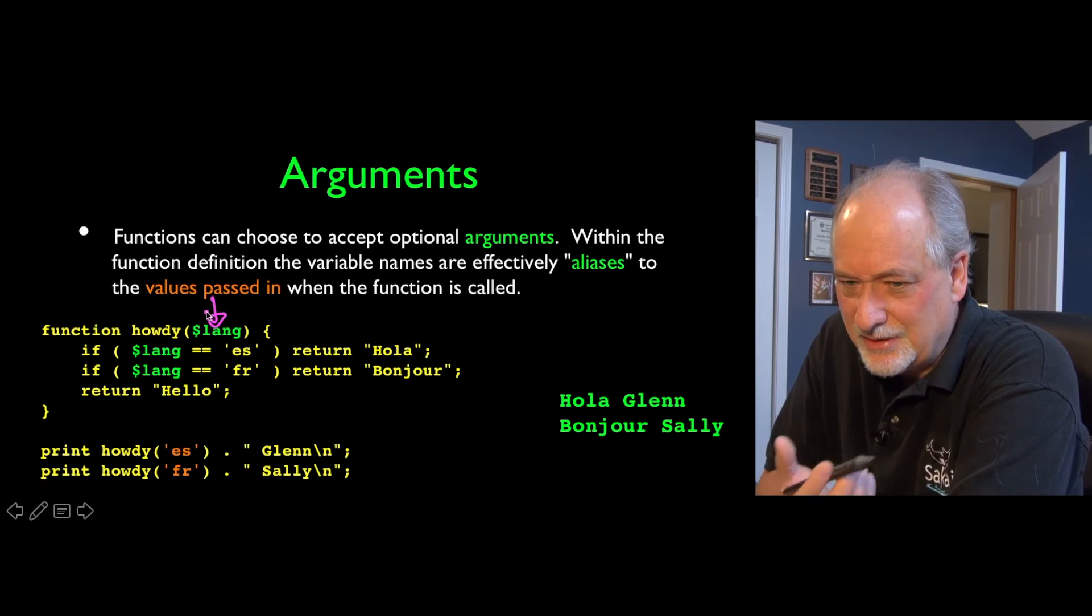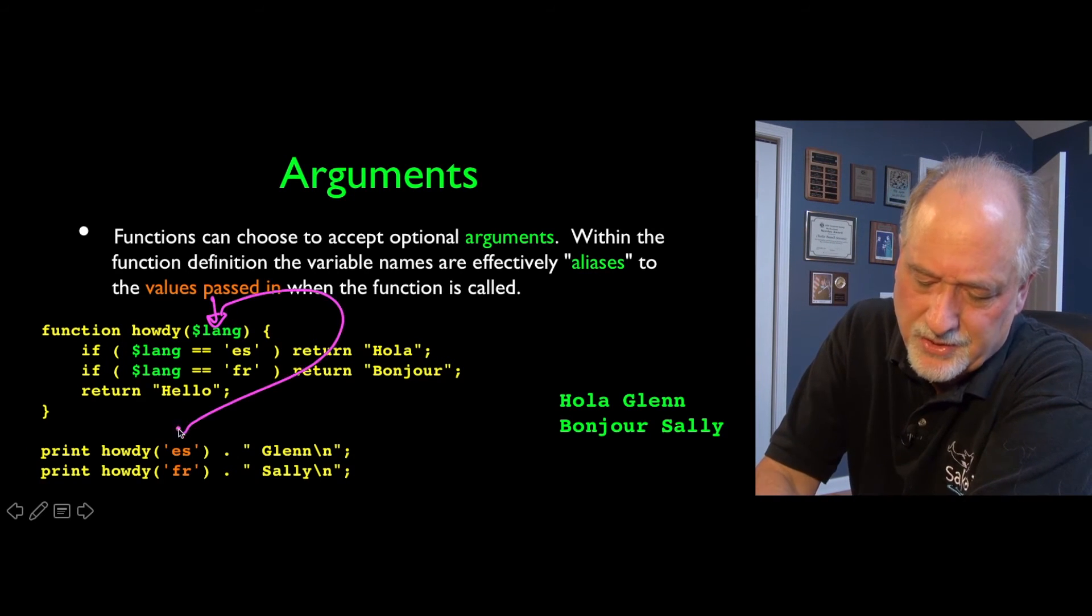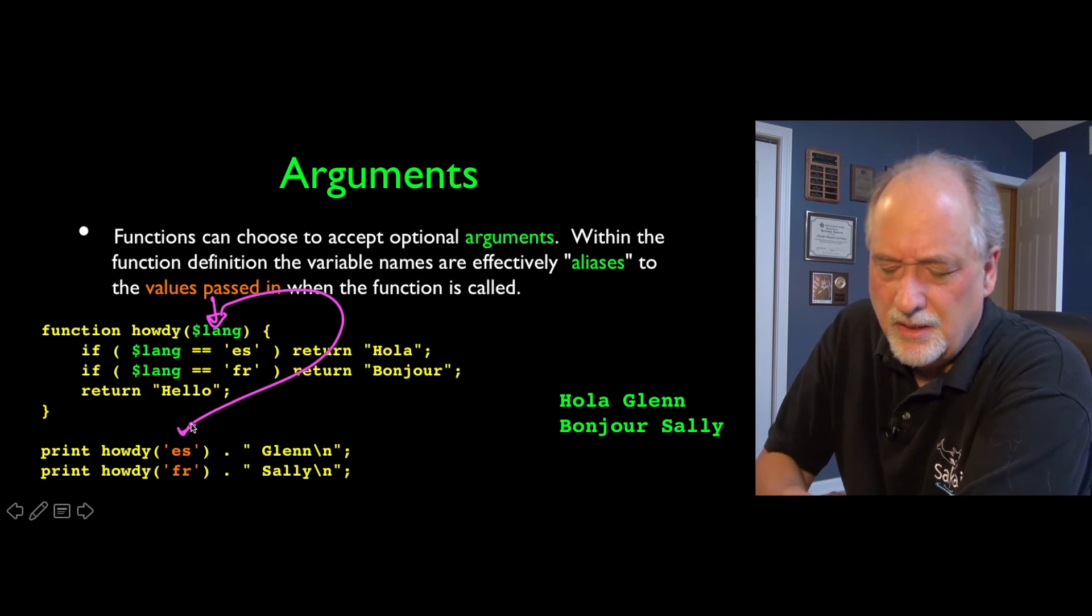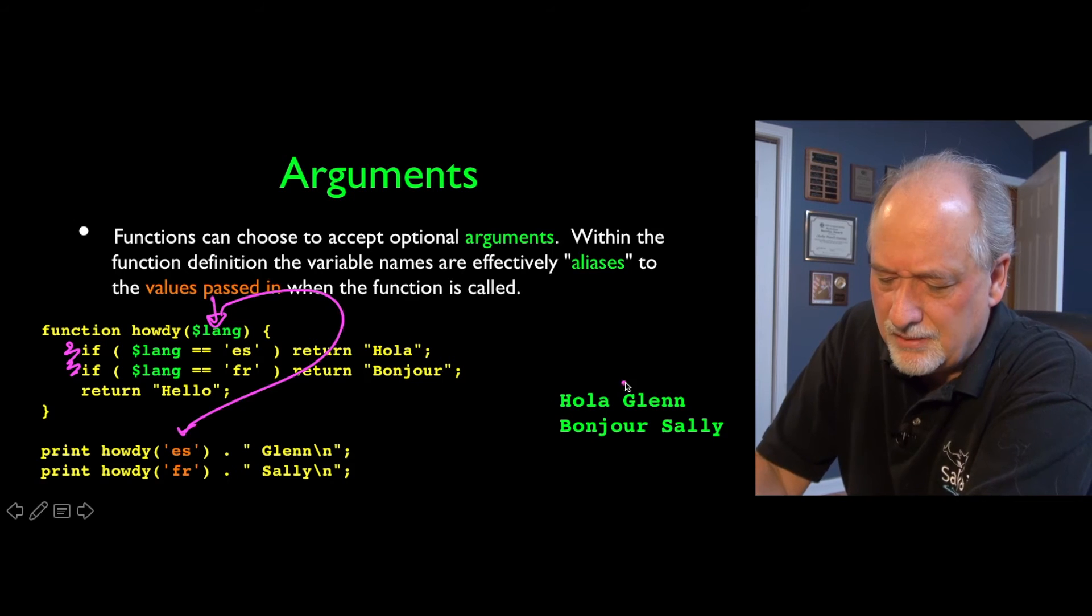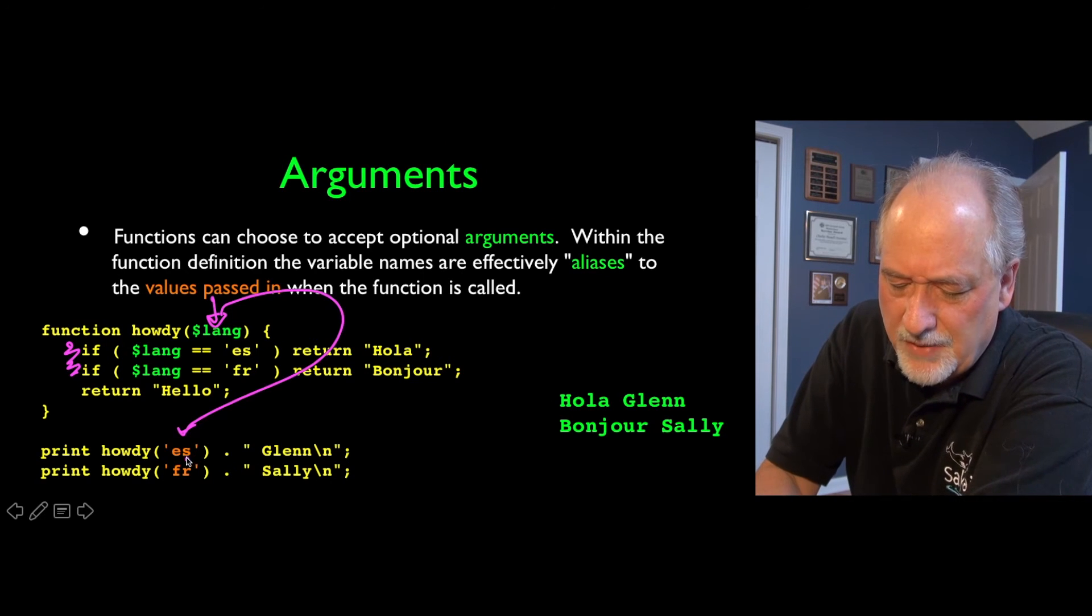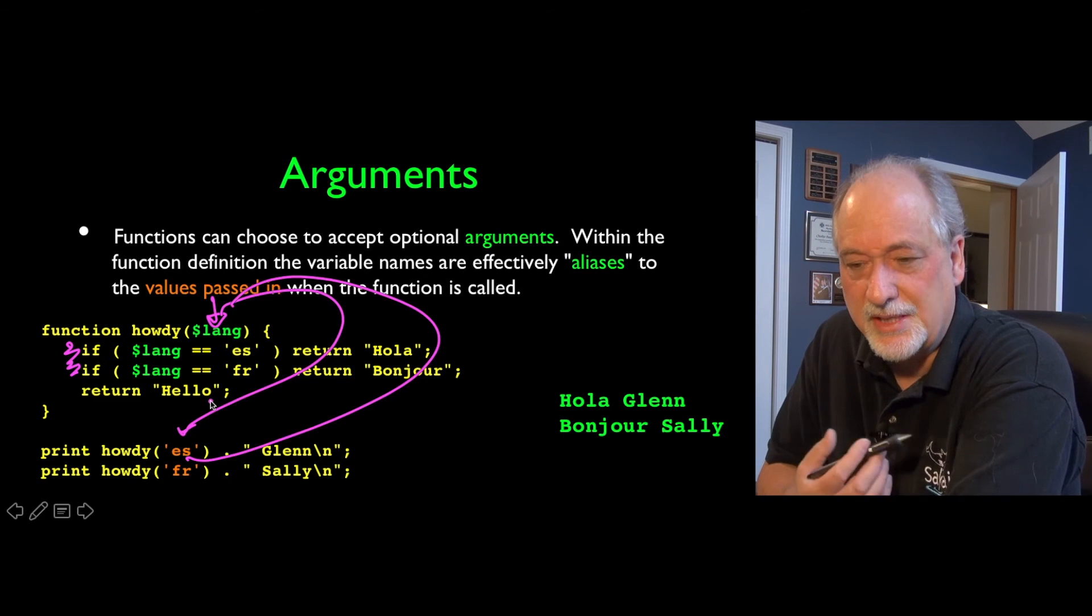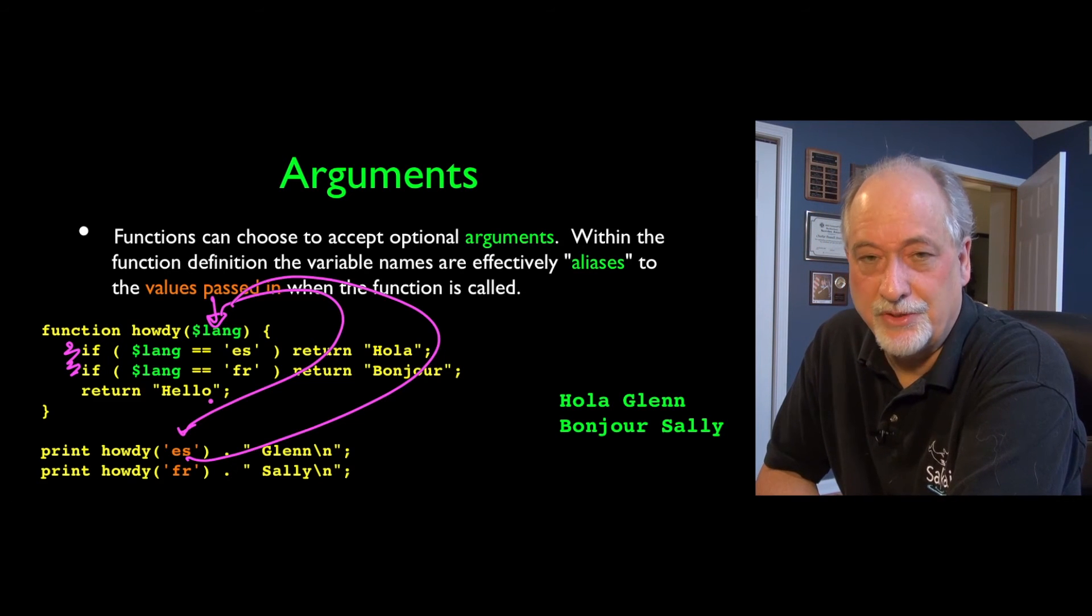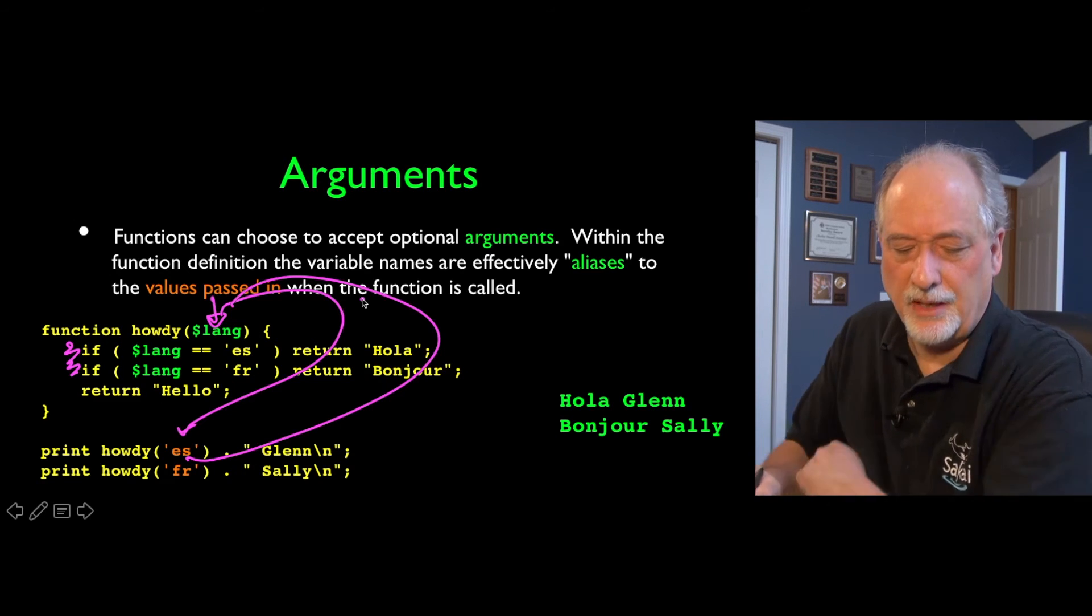Now $lang sort of doesn't exist as a variable. It is an alias in the first call to the string quote es quote. And then it runs and does the thing and it returns in this case, hola Glen. And then the second time it is an alias to quote fr quote. So it's not a real variable. It is an alias to that which is the first parameter in the call. And away we go.